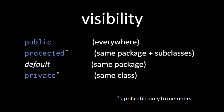Every interface, every class, every field, and every method in Java has a visibility level. The visibility level of a thing determines where in the source code of a program it is allowed to be used.